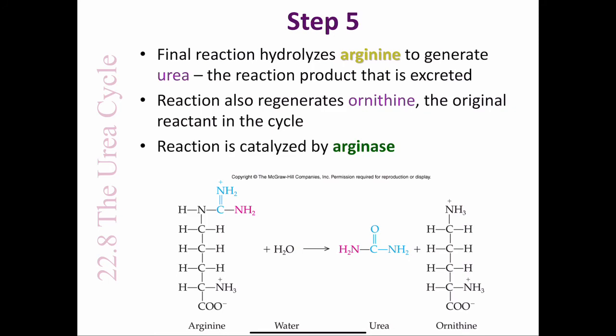In step 5, finally, arginine is hydrolyzed to generate urea to be excreted and ornithine, the original reactant in the cycle. Arginase is the enzyme that catalyzes the reaction. Note that one of the amino groups in urea is derived from the ammonium ion and the second is derived from the amino acid aspartate.